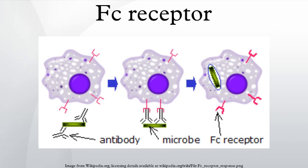Its name is derived from its binding specificity for a part of an antibody known as the FC region. FC receptors bind antibodies that are attached to infected cells or invading pathogens. Their activity stimulates phagocytic or cytotoxic cells to destroy microbes or infected cells by antibody-mediated phagocytosis or antibody-dependent cell-mediated cytotoxicity.